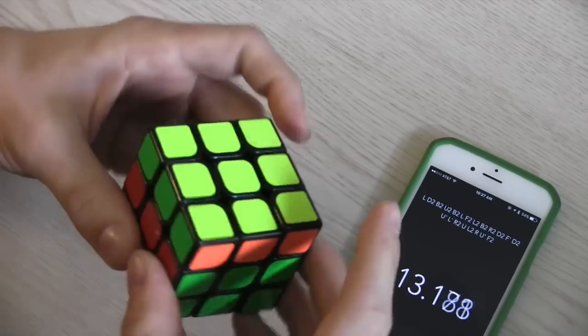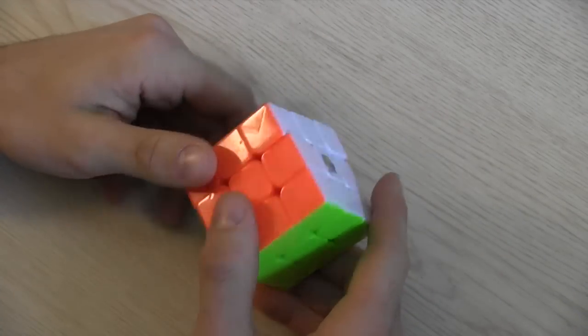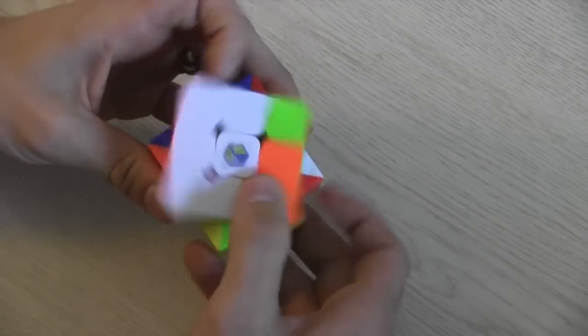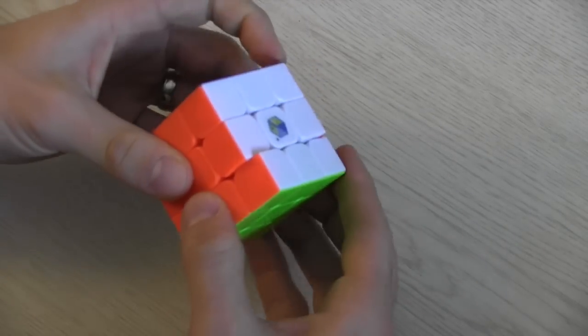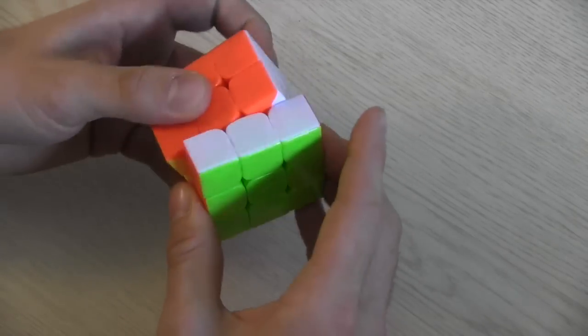There might finally be a competitor though. Yuxin just released the Fire and it's just about a dollar more than the Guanlong, but still around $10 less than other cubes on the market. The biggest difference you can see is that it can be made stickerless. The Guanlong corner pieces are only made of two sections so it can only be made with stickers.